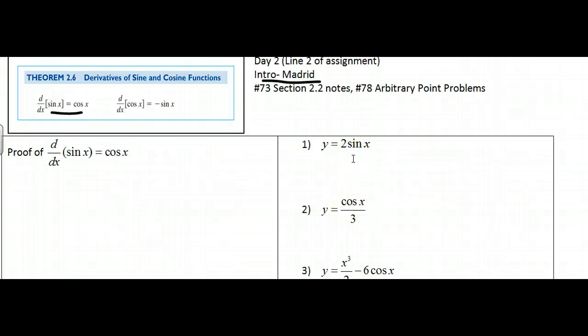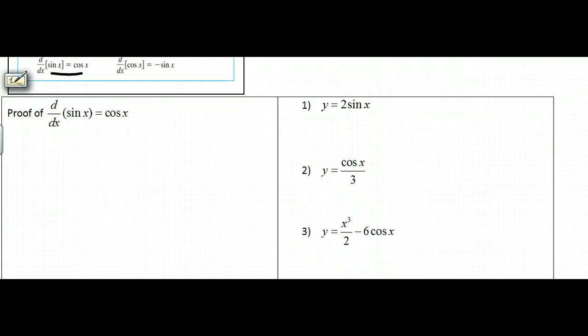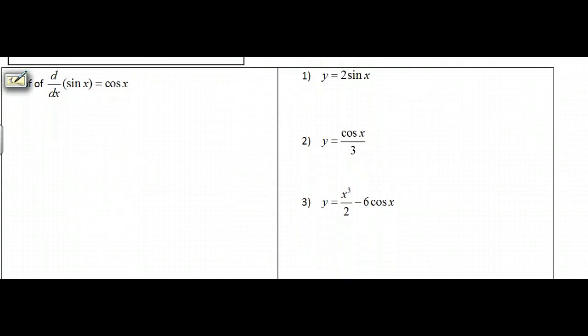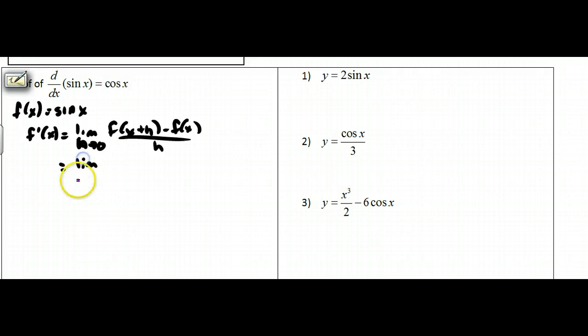But if I want to do the proof on this, I can. And it takes some things that we've been doing already. So if I take the derivative of the sine and prove that this is equal to the cosine, what I want to do is I know that the derivative, first of all, let's let f(x) equal sine of x. And then I have f prime is equal to the limit as h approaches zero of f(x + h) minus f(x) all over h.